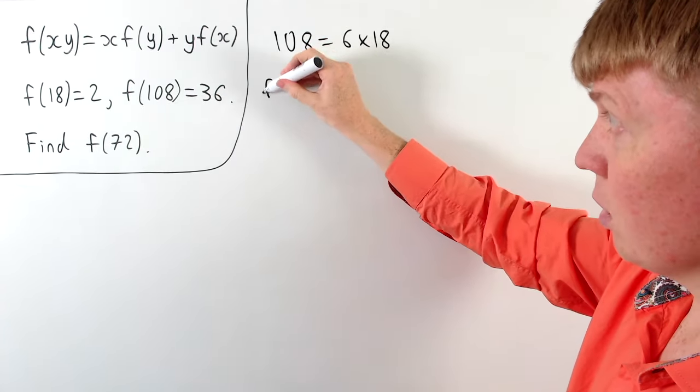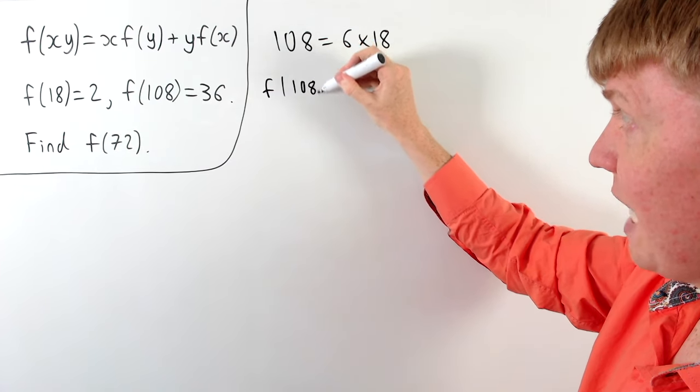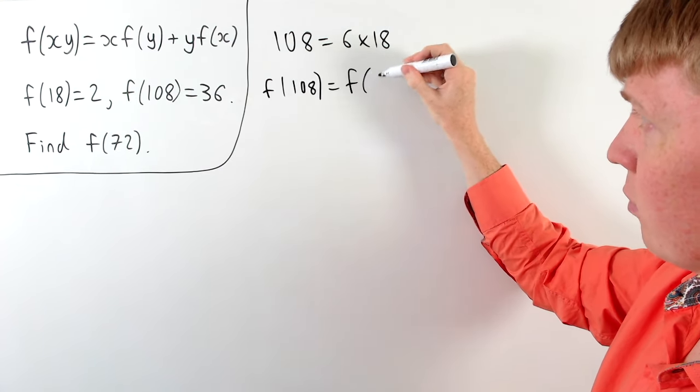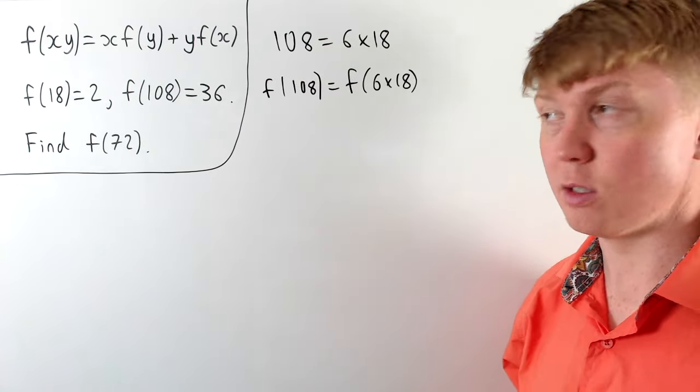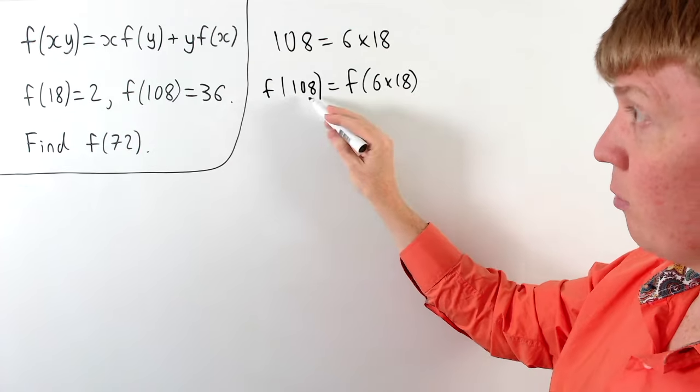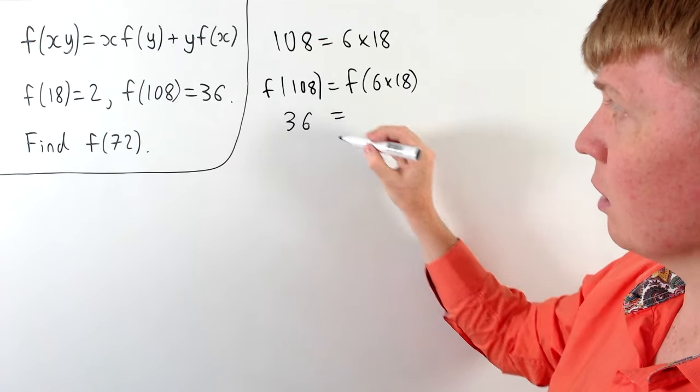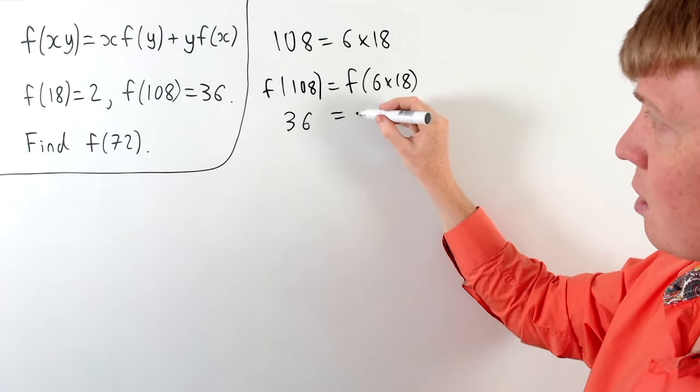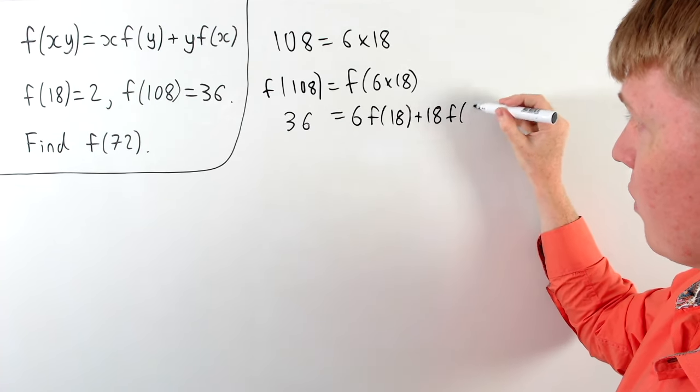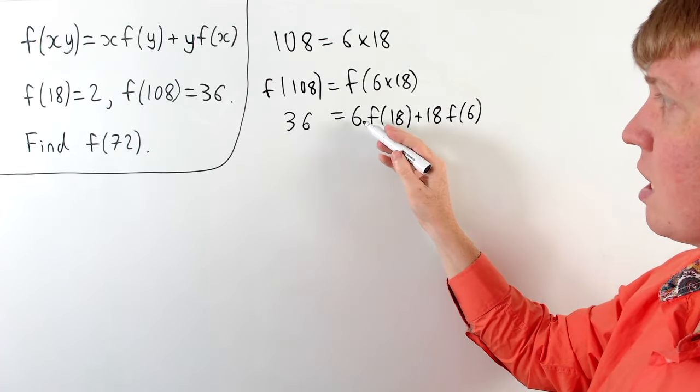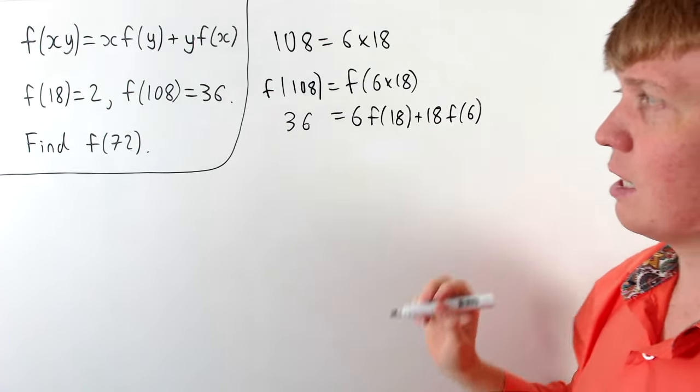So let's just write this out. We know f of 108 is equal to f of 6 times 18. So we can think of our 6 as being x and our 18 as being y. So we know that f of 108 is 36, and then we can write this as 6 times f of 18 plus 18 times f of 6 using the functional equation with 6 is x and 18 is y.